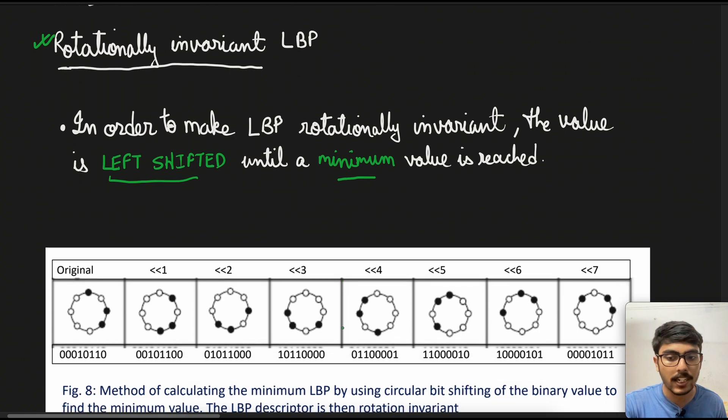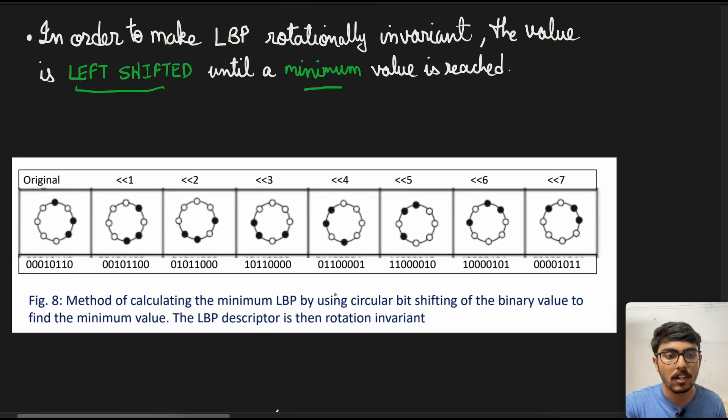In order to make LBP rotationally invariant, the value is left shifted. Left shifting is an operation that is quite feasible or computationally inexpensive in computers. We will do that until we get a minimum value for our LBP. This is the actual LBP, and what we are doing is we are just left rotating. This zero will go away and you see that zero is added here. Similarly, now this zero will go away and that zero is added here.